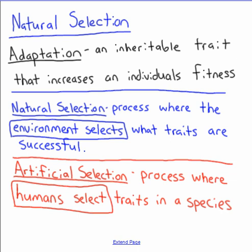Natural selection is a huge driving force for evolution, but before we can understand that we need to understand what an adaptation is. An adaptation is an inheritable trait — a trait embedded in the DNA — that increases an individual's fitness. Fitness in evolution is your ability to stay alive, not get eaten, and your ability to reproduce.